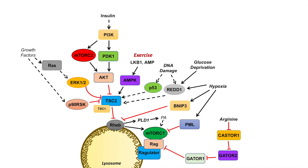The second important amino acid for RAG activation is leucine. Leucine is a branched-chain amino acid and acts on a leucine sensor, Sestrin2. As with Castor1, when there is no leucine, Sestrin2 inhibits GATOR2, which leads to GATOR1 being able to inhibit RAG. But when leucine is present, leucine inhibits Sestrin2, leading to activation of GATOR2. GATOR2 then inhibits GATOR1, which leads to activation of RAG and mTOR complex 1 signaling. It's a very complex pathway, but if you sit down and think through it, you'll be able to understand it.